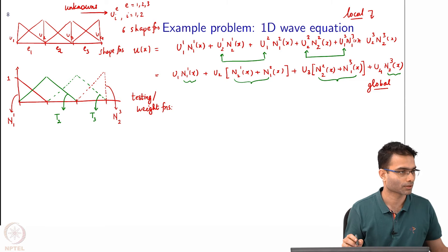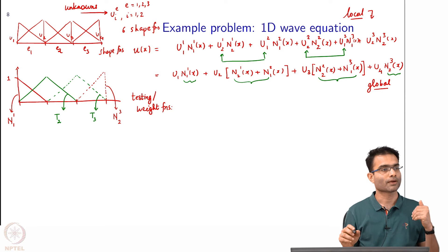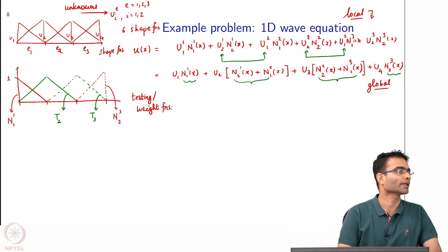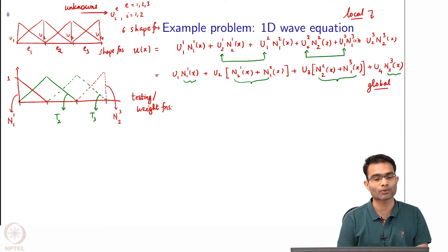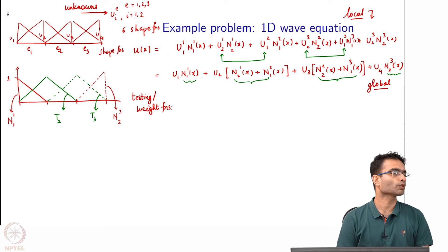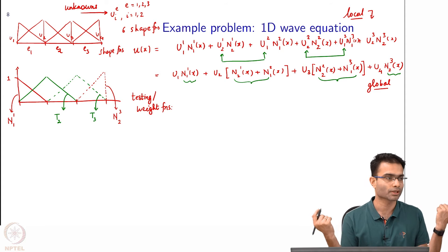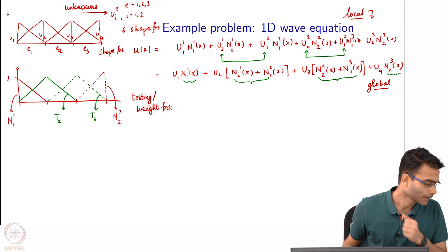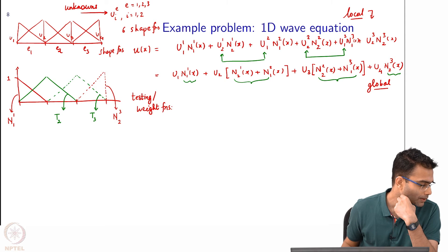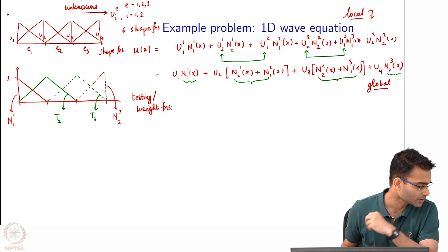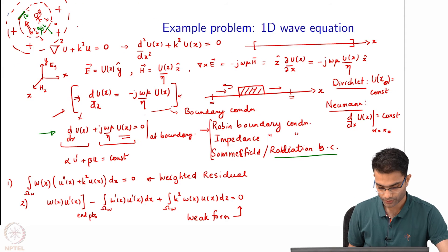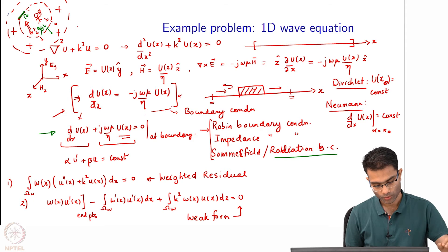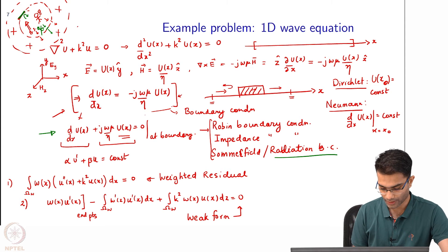These are the 4 testing functions. When I apply them to my equation I get 4 equations in 4 variables. In general, the strategy is: wherever a node is shared, combine the shape functions; end-point nodes remain as they are. Now let us go step by step and do the testing with respect to each of these basis functions. Let us look back at our equation.